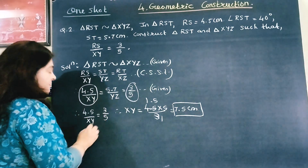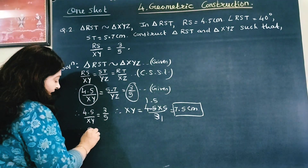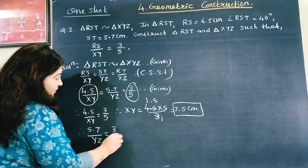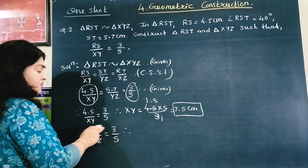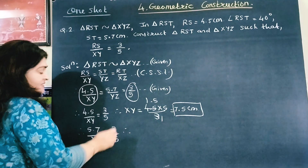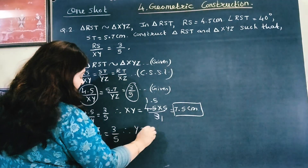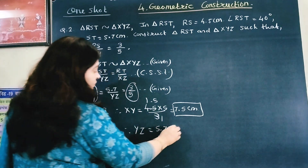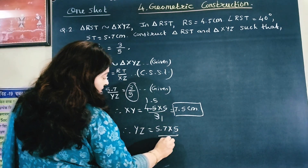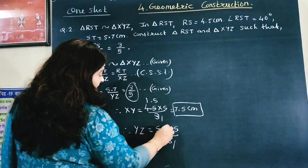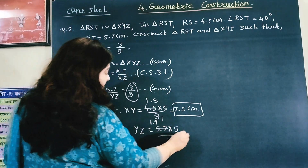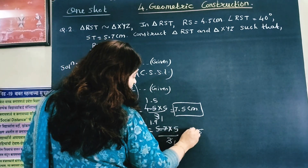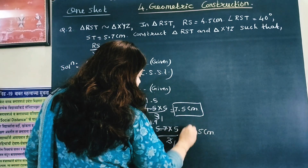Now taking the second and third ratio: 5.7 upon YZ equals 3 upon 5. So YZ equals 5.7 × 5 upon 3, which gives YZ = 9.5 cm.